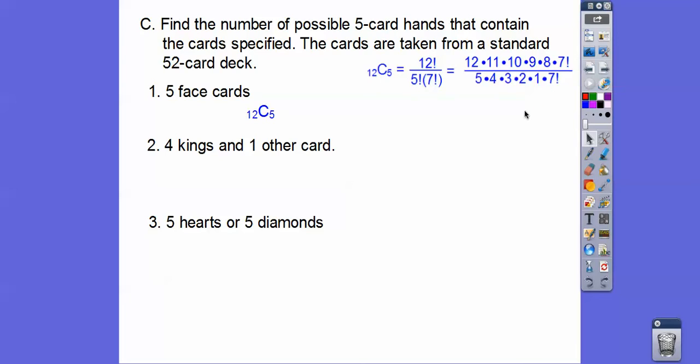The 7 factorials cancel, and then you can start canceling. This 5 goes into 10, this 4 goes into 8 or the 12, doesn't matter. And then 3 goes into 9, or if you didn't cancel the 12, and so on. So anyways, you get 792 different hands.